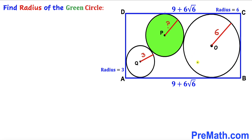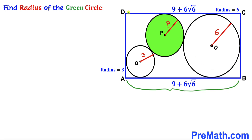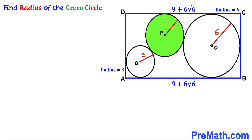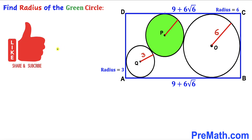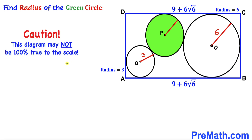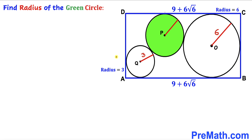Welcome to PreMath. In this video we have three circles with centers O, P, and Q respectively, fully inscribed in a rectangle ABCD. The radius of the largest circle is 6 units, the radius of the smallest circle is 3 units, and side AB and side CD are 9 plus 6 times the square root of 6 units. Our task is to calculate the radius of the green shaded circle.